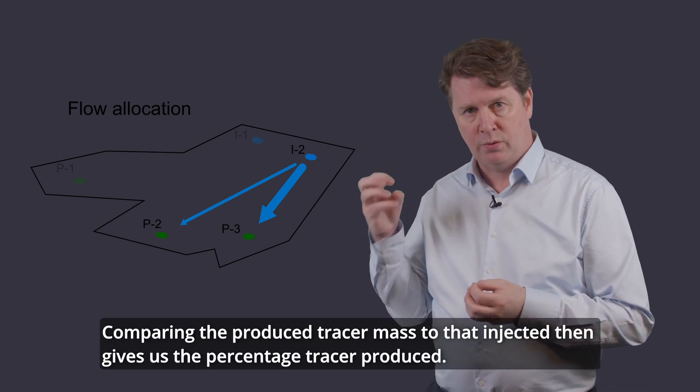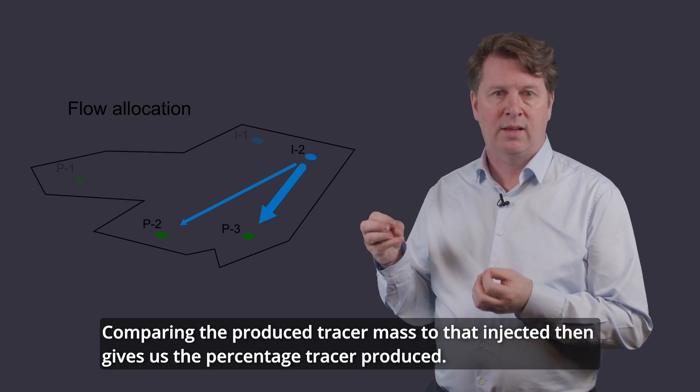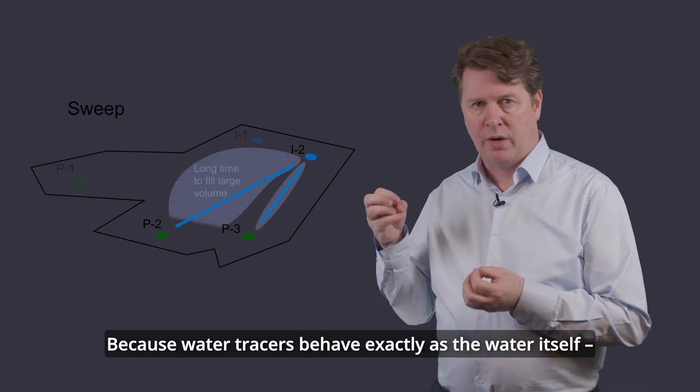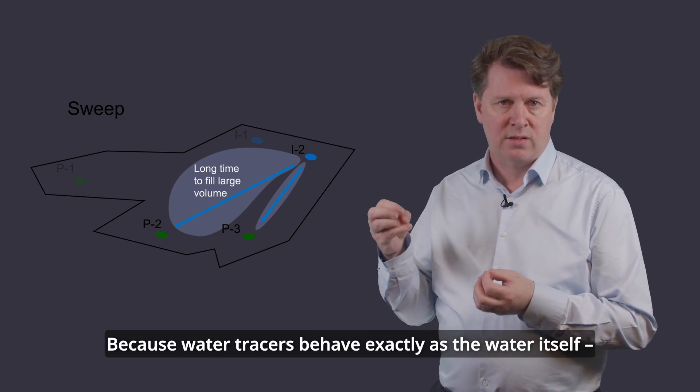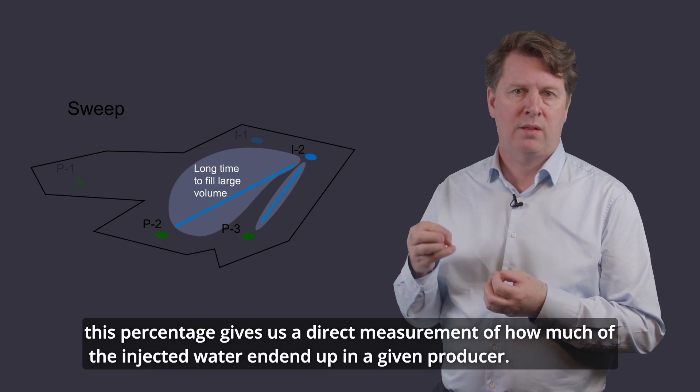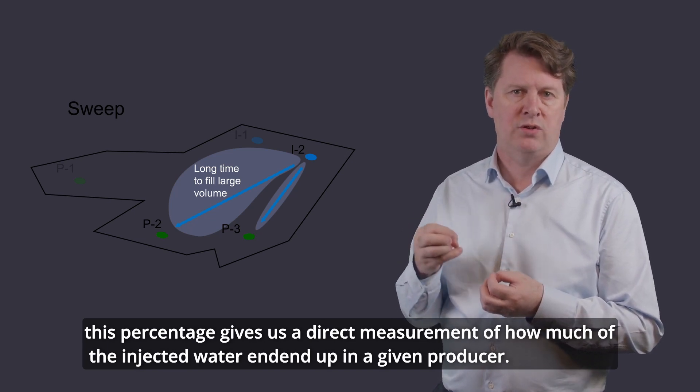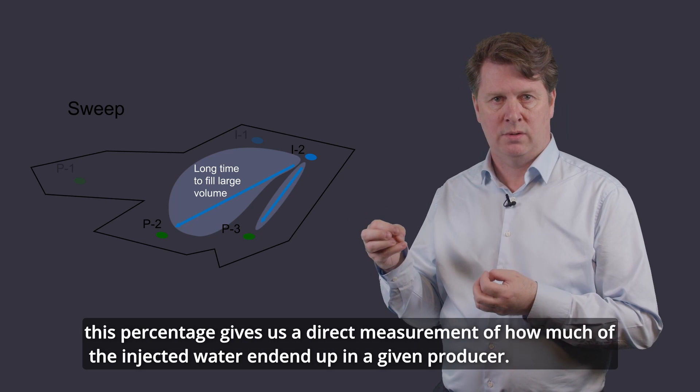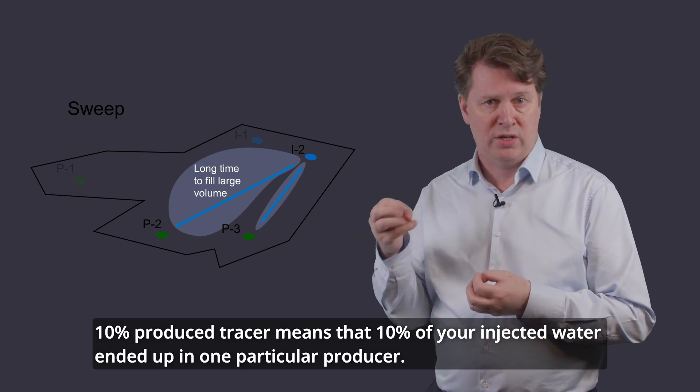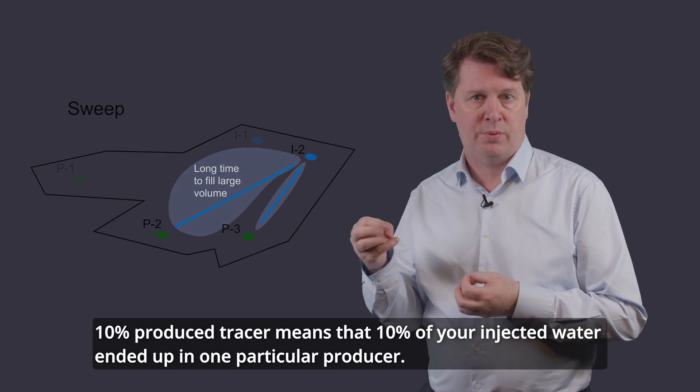Comparing the produced tracer mass to that injected then gives us the percentage of tracer produced. Because tracers behave exactly as the water itself, this percentage gives us a direct measurement of how much of the injected water ended up in a given producer. Ten percent produced tracer means that ten percent of your injected water ended up in that particular producer.